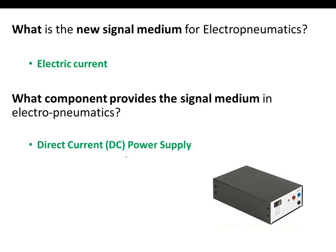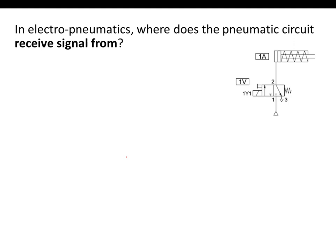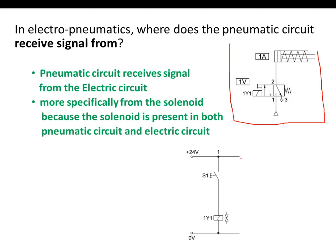In electro-pneumatics, where does the pneumatic circuit receive signal from? In an electro-pneumatic circuit, the pneumatic part receives signal from the electric circuit — specifically from the solenoid. From the solenoid, a signal will be sent to our final control element to be switched on and off.